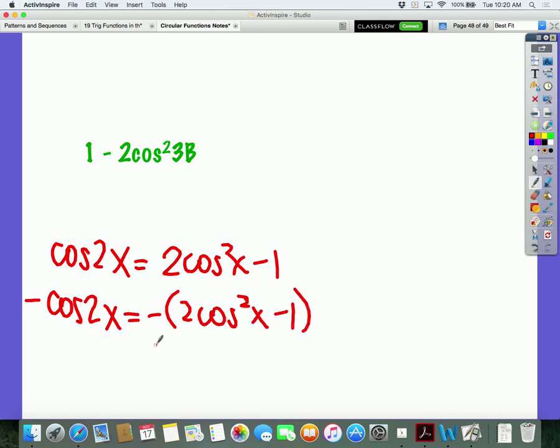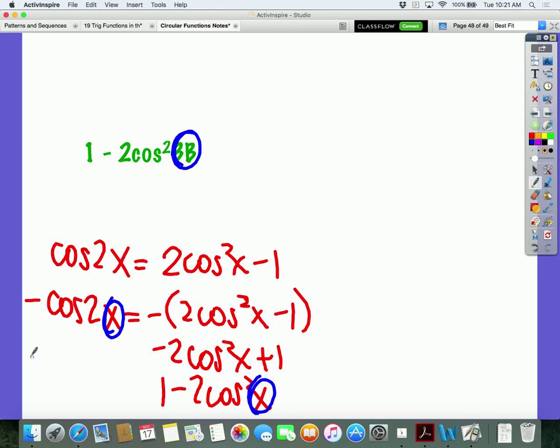So, then we can negate the whole thing. And then from there, you can see that what am I going to plug in for x? 3b. 3b. So, this is actually going to be a negative cosine 2 times 3b. So, a negative cosine 6b.